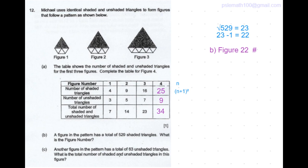Compared to figure 3, figure 2 has 2 less unshaded triangles. Compared to figure 2, figure 1 has 2 less unshaded triangles. So figure 0 would have 3 minus 2 which is just 1 unshaded triangle. So that becomes our constant. So constant here is 1.